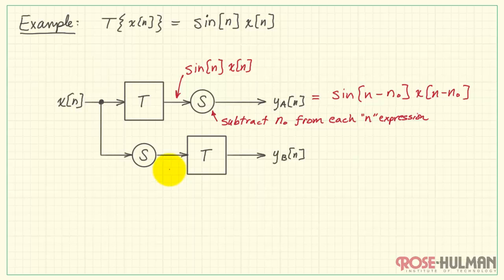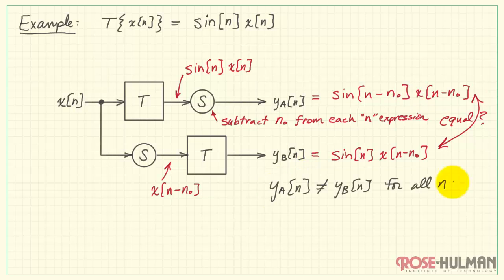Now let's pass X of N through the shift operation first. This is our pre-shifted version. Then we'll pass that through the system T. Now let's think this through. We see that the system multiplies any and all inputs by sine of N. But our input in the lower track here is X of N minus N-naught. Then we ask ourselves, are these the same? Well, those are the same. However, we see this portion of our output equation is not the same. YA is not equal to YB. Therefore, we conclude that the system T is not time invariant.